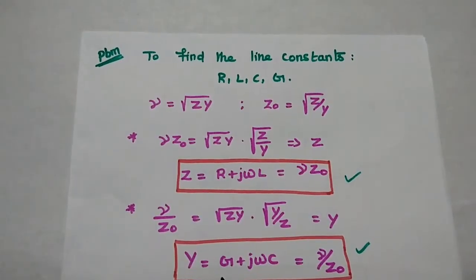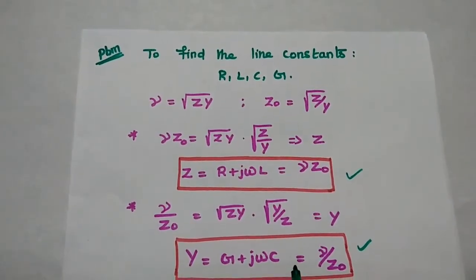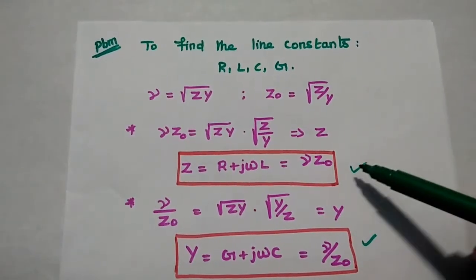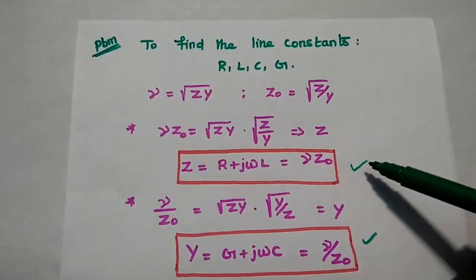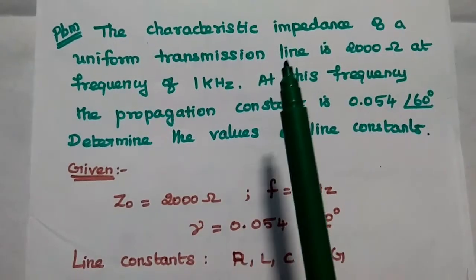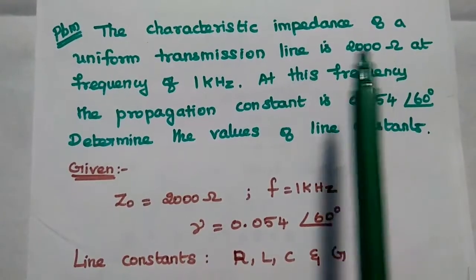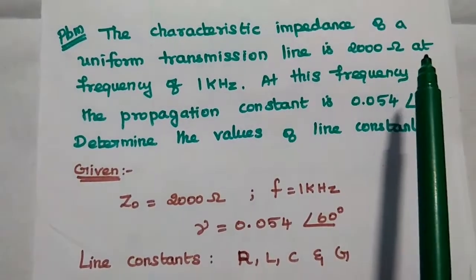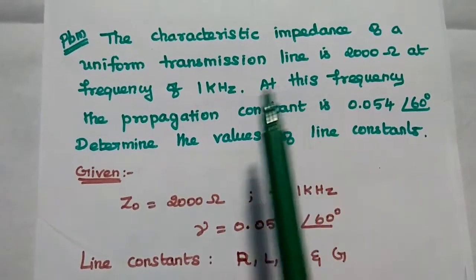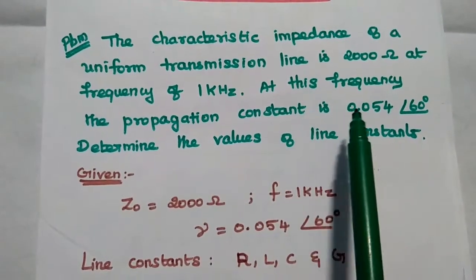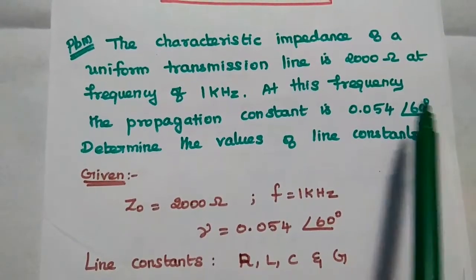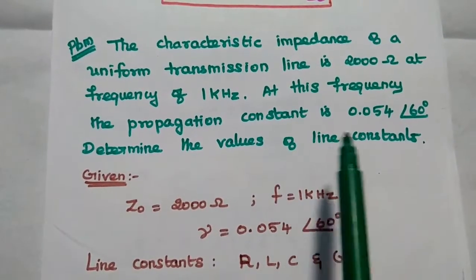Here we can get the values of conductance and capacitance. These two formulas are very important in finding out the primary constants of the transmission lines. The first problem: the characteristics impedance of a uniform transmission line is 2000 ohm at a frequency of 1 kilohertz. At this frequency, the propagation constant is 0.054 with angle 60 degrees. Determine the values of line constants.